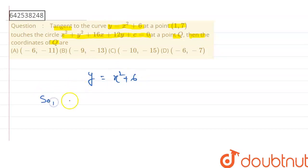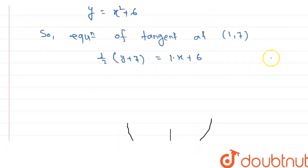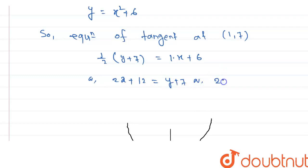So, the equation of the tangent at the point (1, 7) is given by: half of (y + 7) · 1 · (x + 6). We reduce this equation. So, we have 2x + 12 = y + 7. Or, we can say 2x - y + 5 = 0. That is the equation of the tangent at the point (1, 7) to the parabola.